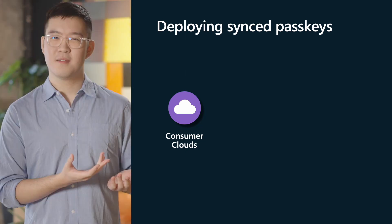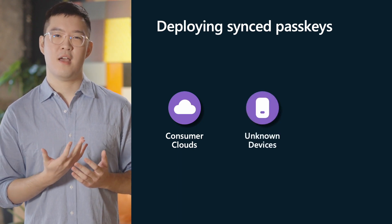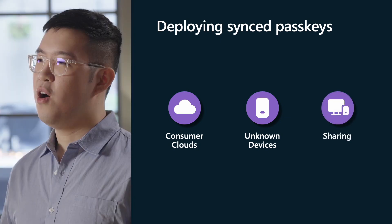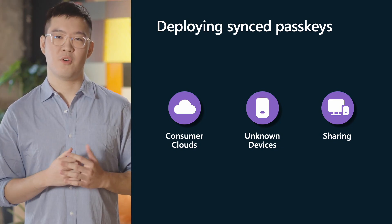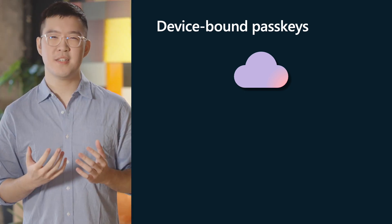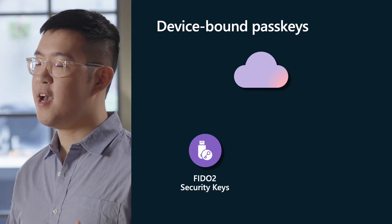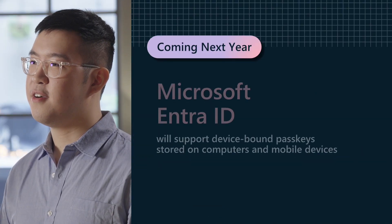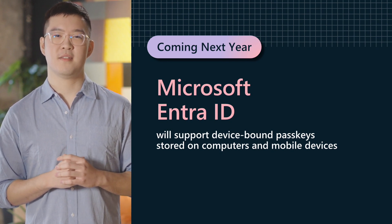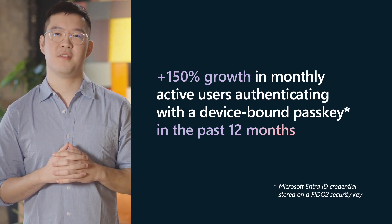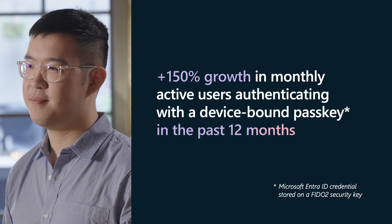As passkeys sync across devices, it becomes more difficult to understand the properties of the user's device as it can change over time. Additionally, users have the ability to share sync passkeys with family, friends, and others — which, while convenient for shared accounts, might be undesirable for work or school accounts. Passkeys can also be device-bound, meaning the passkey cannot leave the device it was created on. Passkeys are device-bound when stored in FIDO2 security keys, as well as Windows Hello for Business. We are excited to announce that coming next year, we will be expanding Microsoft Entra ID to support device-bound passkeys stored in computers and mobile phones. In the past 12 months alone, we have seen more than 150% growth in monthly active users authenticating with a device-bound passkey.